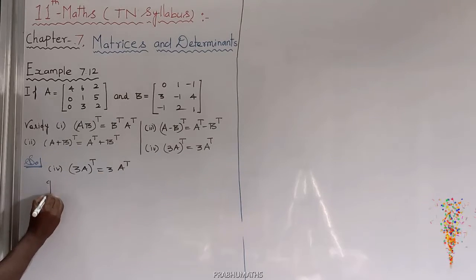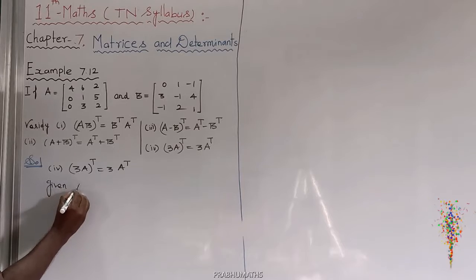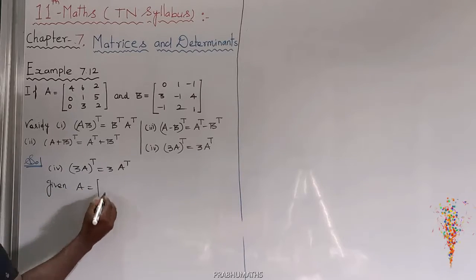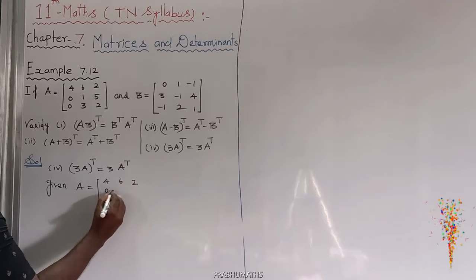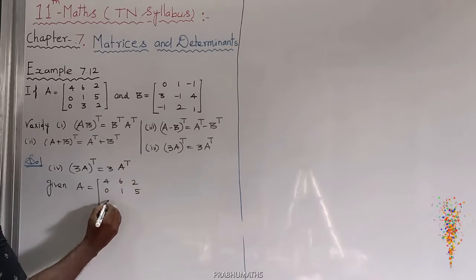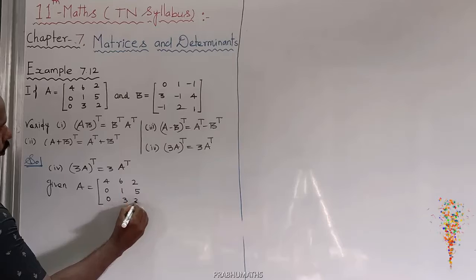So the given A matrix is: A is equal to 4, 6, 2, 0, 1, 5, 0, 3, 2.